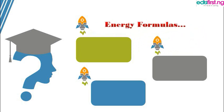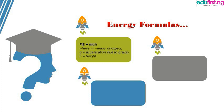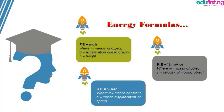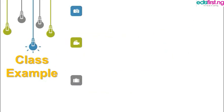Here are energy formulas to use when solving questions related to energy. The first is potential energy (PE): use mgh, which is mass multiplied by acceleration due to gravity multiplied by height. For kinetic energy (KE), use the formula ½mv², which is half multiplied by mass multiplied by the velocity of the moving object. Lastly, energy in a spring (Es) is given by the formula ½ke², where k is the spring constant and e is the distance the spring is stretched or compressed.